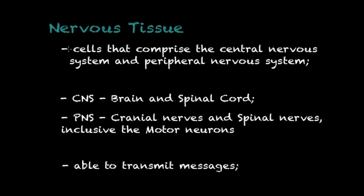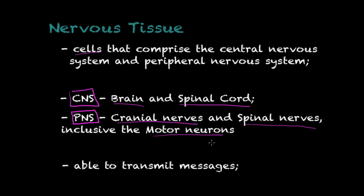Nervous tissue is fourth on our list. These are the cells that comprise the central nervous system (CNS) and peripheral nervous system (PNS). The CNS is comprised of the brain and spinal cord. The PNS includes cranial nerves, spinal nerves, and motor neurons spread throughout the rest of the body. The special characteristic of nervous tissue cells is that they are able to transmit messages, communicate with one another, and carry signals throughout the body from one point to another.